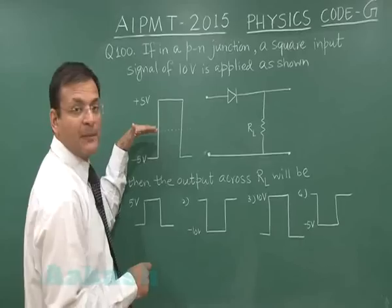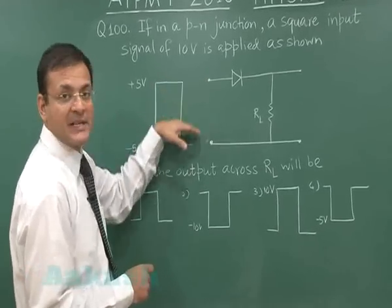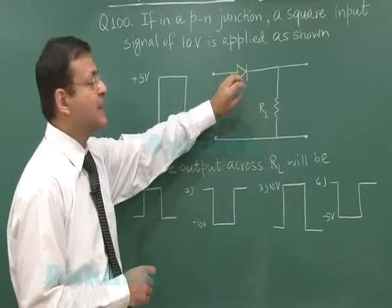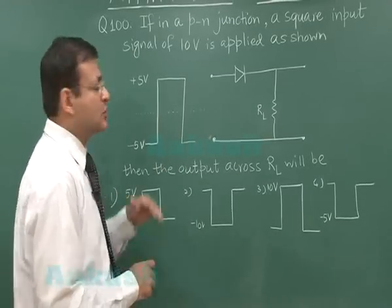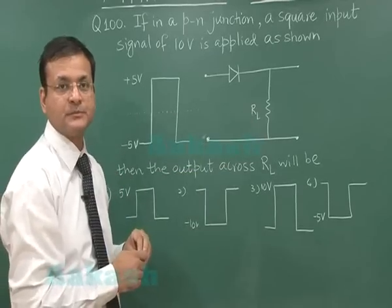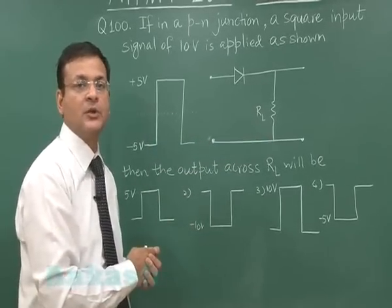If you apply any value of 0 or less, it will not be passed by this diode because it will be in reverse biasing. Only between 0 to 5 volts will it be in forward biasing and passing the signal. This is a simple property of the diode.